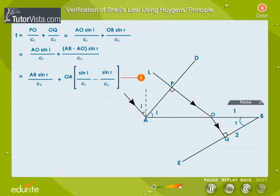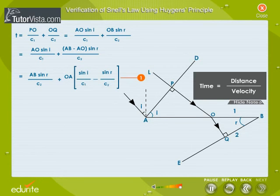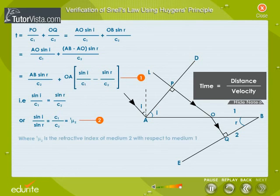For this, the coefficient of OA in the relation should be zero. That is, sine I by C1 equals sine R by C2, or sine I by sine R equals C1 by C2, that is equal to 1 mu 2, where 1 mu 2 is the refractive index of medium 2 with respect to medium 1.